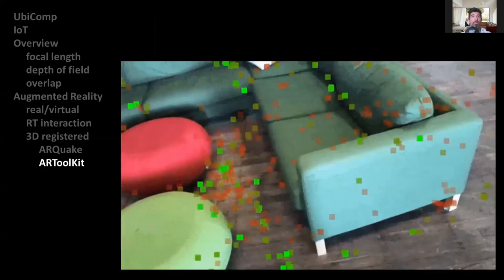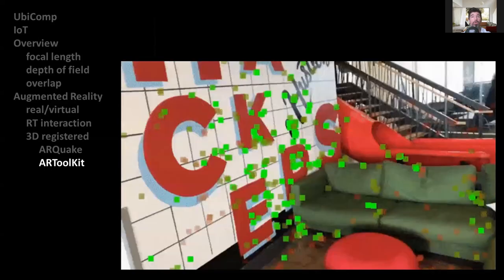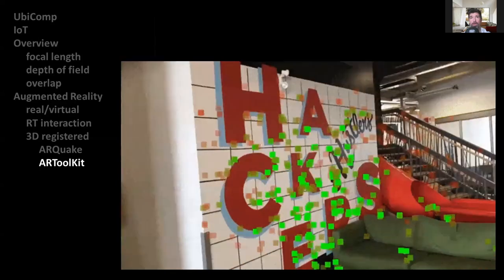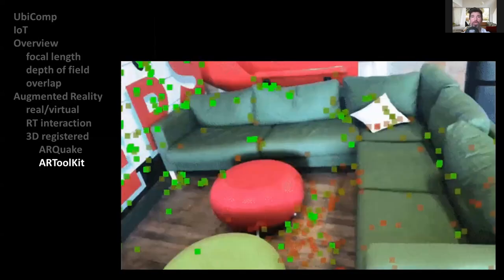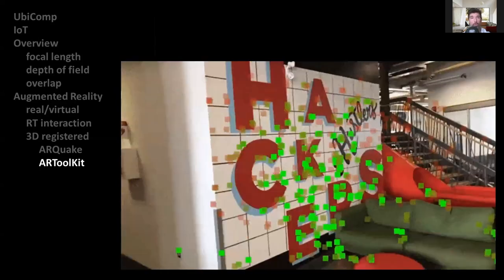Once the real camera position is known, a virtual camera can be positioned at the same point and 3D computer graphics models can be drawn, exactly overlaid on the real marker. So AR Toolkit solves two of the key problems in augmented reality, viewpoint tracking and virtual object interaction.